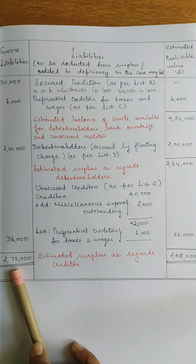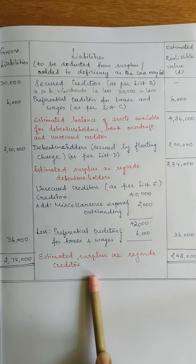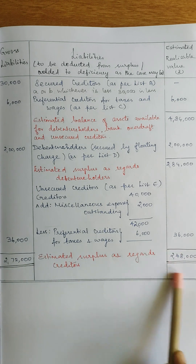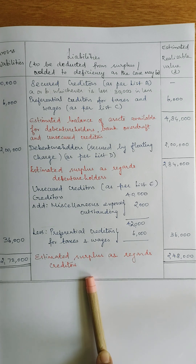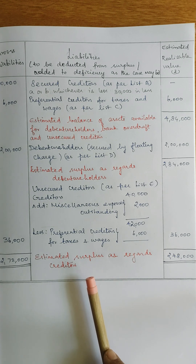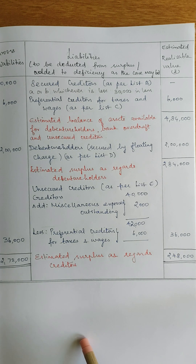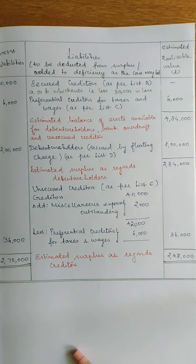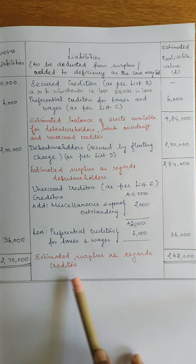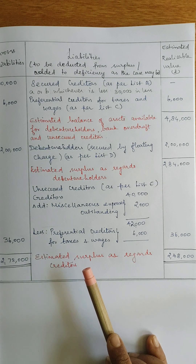So, gross liabilities minus gross assets gives the correct sum. We need to show creditors what's available for payment. The statement of affairs is prepared for the creditors meeting — contributors are also mentioned. This completes the statement of affairs. Thank you for watching the video, stay tuned.